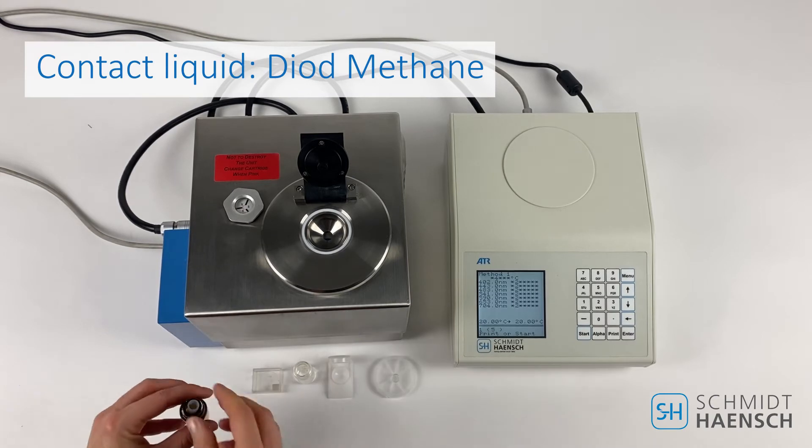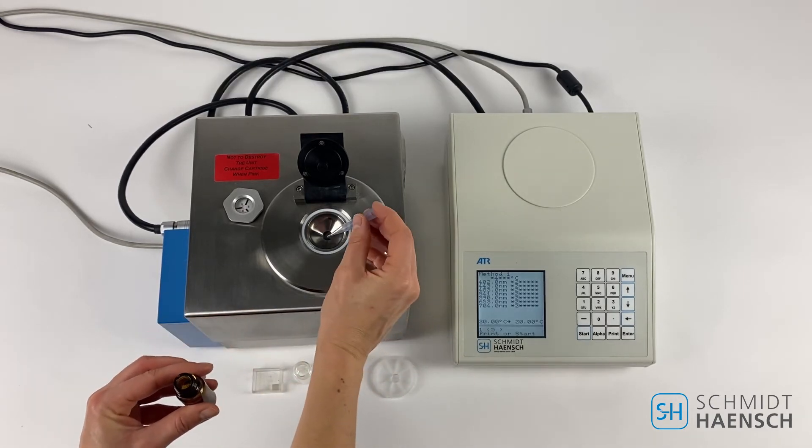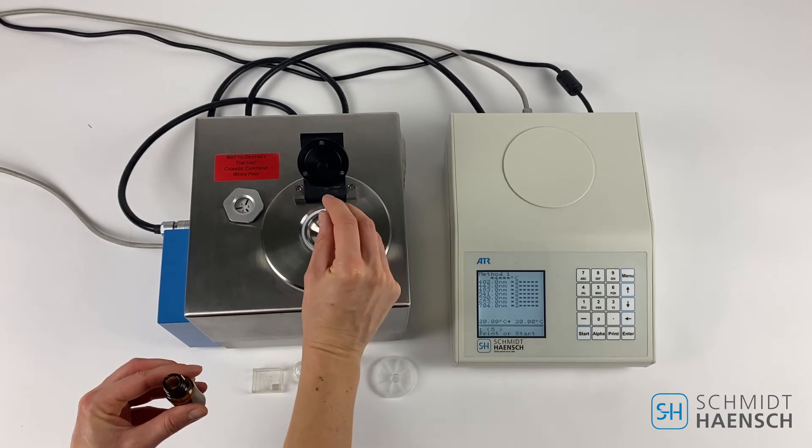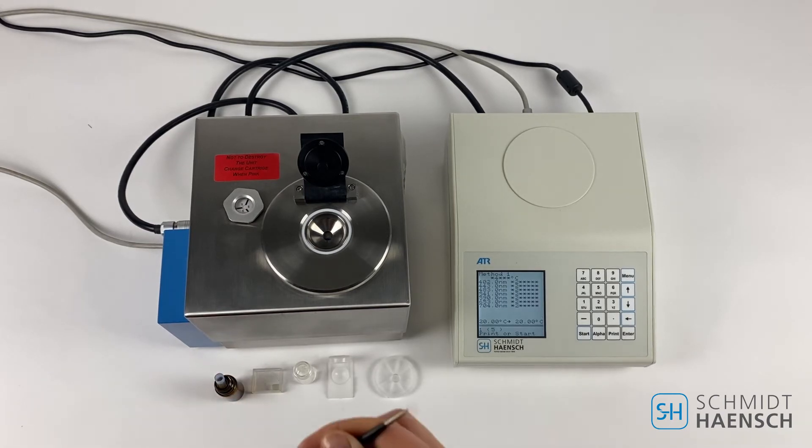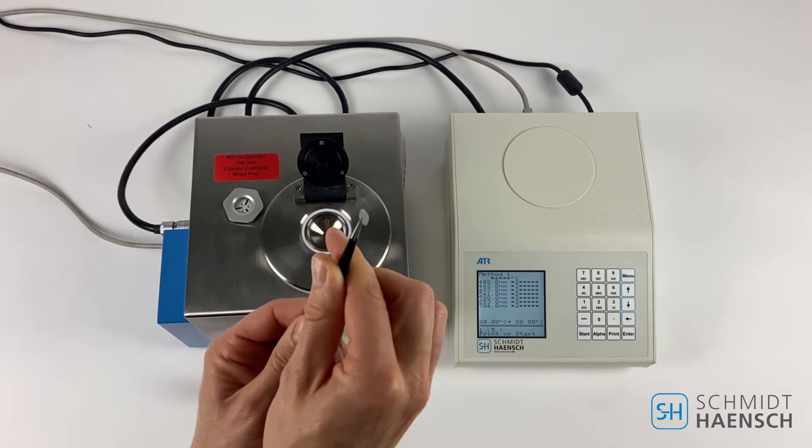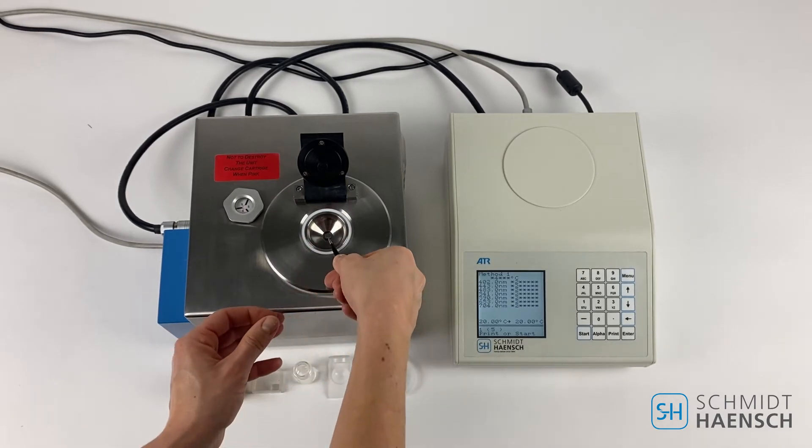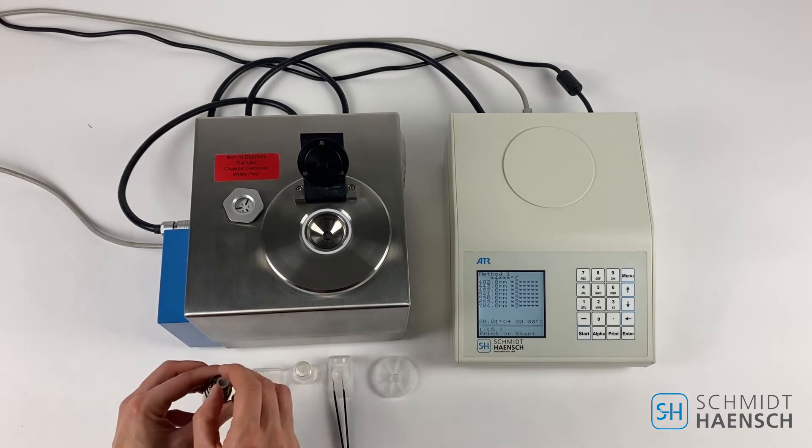We will demonstrate how to measure a thin polymer foil sample. We will use a contact agent, one single drop onto the prism surface. We have the thin polymer foil sample, a cut piece that we will put on top of the prism surface.